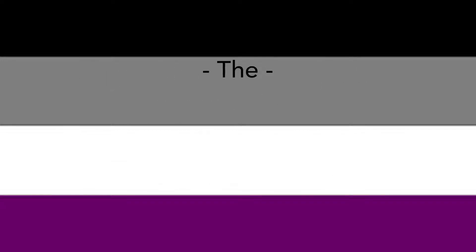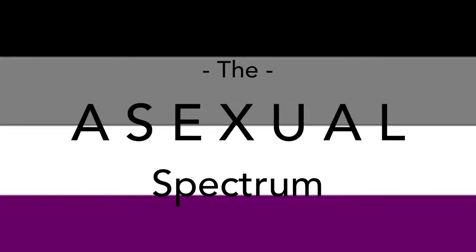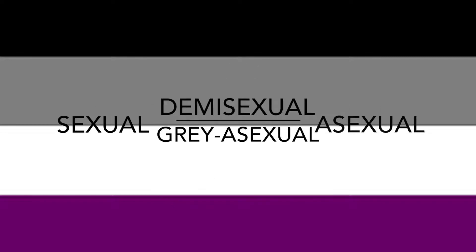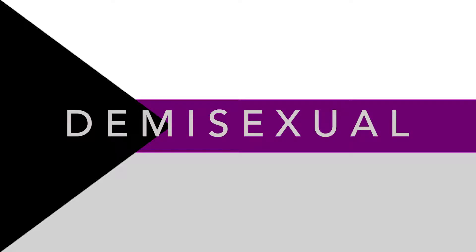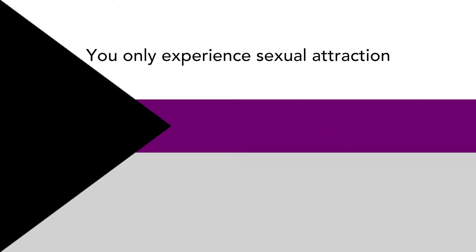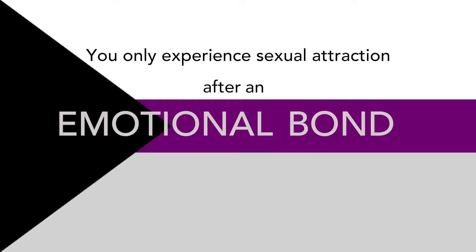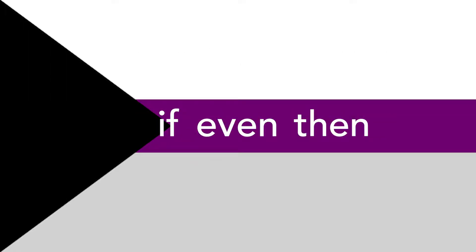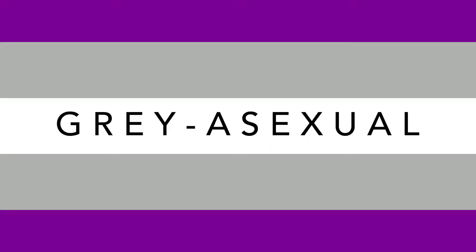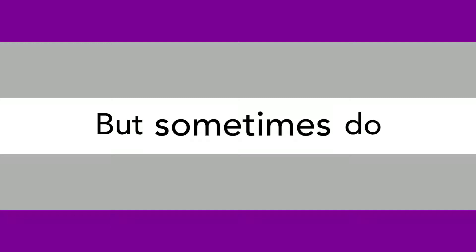Asexual is considered to be part of a spectrum called the asexual spectrum. This is a spectrum between sexual and asexual, with demisexual and gray asexual in between. Demisexual is what you would call yourself if you only experience sexual attraction after an emotional bond is formed, if even then. Gray asexual, or gray ace, is when you don't normally experience sexual attraction, but sometimes do.